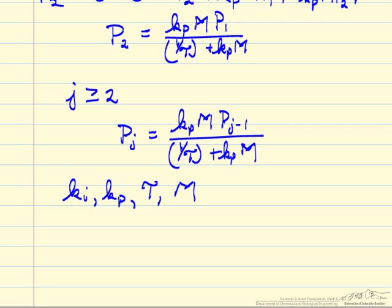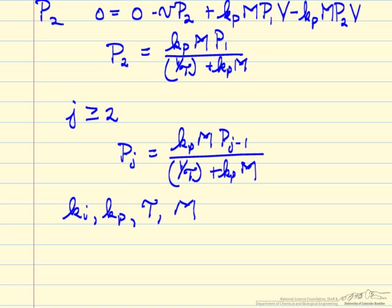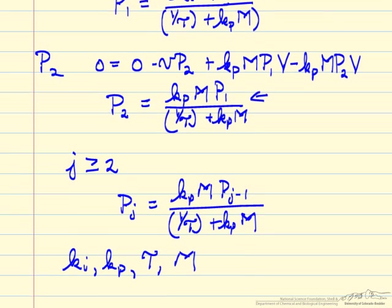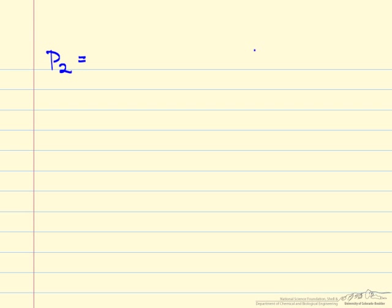Now once we have this general form, the question is how do we use that to calculate molecular weight distributions? The first thing to note is that polymer J concentration can be determined in terms of polymer J minus 1, which means polymer 2 can be determined in terms of polymer 1 concentration. So we take the polymer 1 concentration, substitute into this equation, and write polymer 2 just in terms of monomers, tau, and the rate constants.